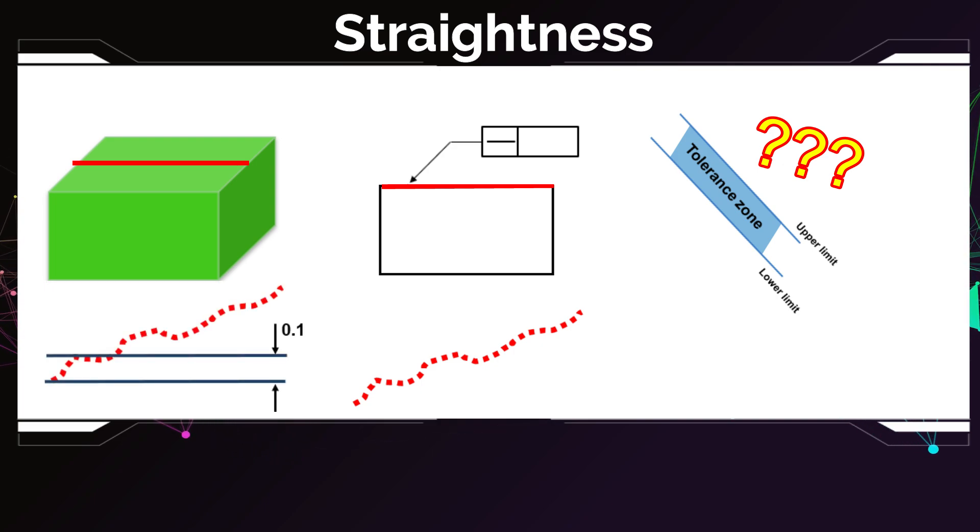or is it like this? And the correct answer is exactly here. So the distance between the lowest point and the highest point along the orientation of the line has to be 0.1,